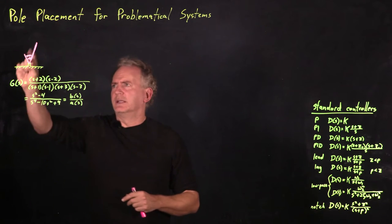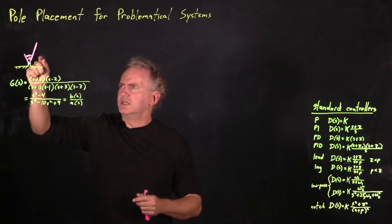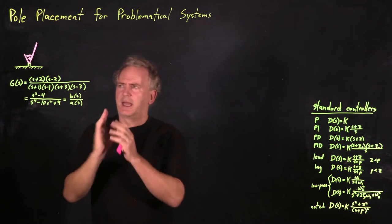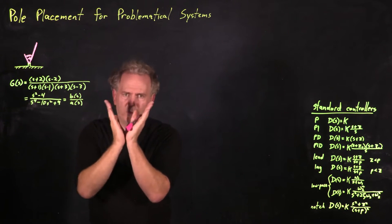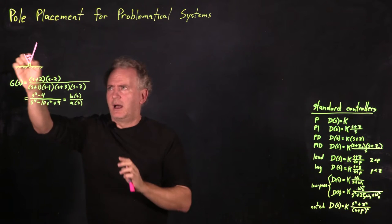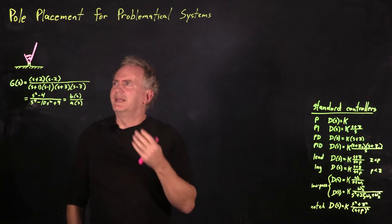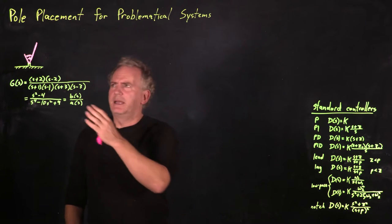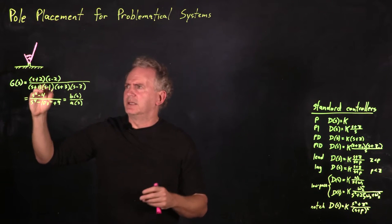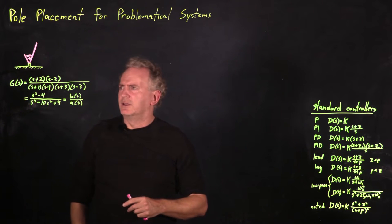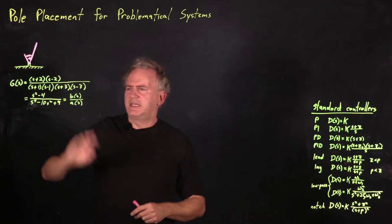Consider two pendula mounted to a post with a spring connecting them and a motor attached to one pendulum that can push on the other. They're mounted to a pivot point on top of a post and are free to move. The motor pushes one pendulum against the other, with a spring attached between them. Notice the pendula are of different lengths. If you write down the transfer function for appropriate lengths of the two pendula, you get a transfer function of a particular form. Let's take this as our starting point.